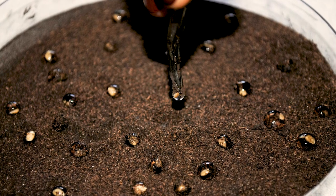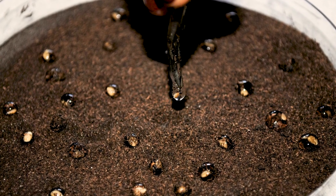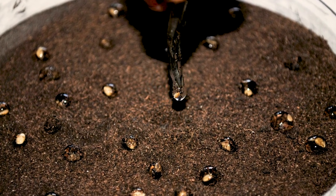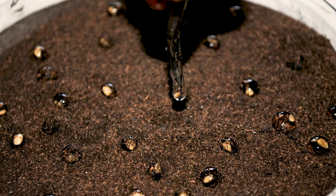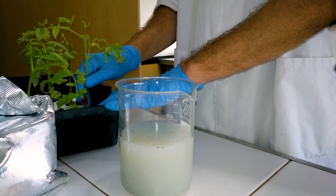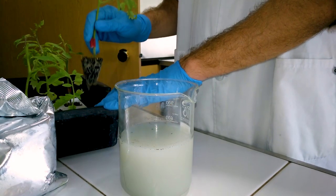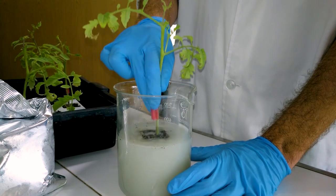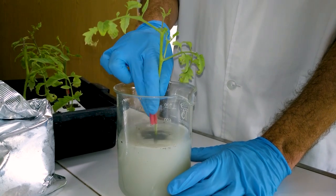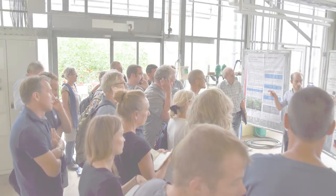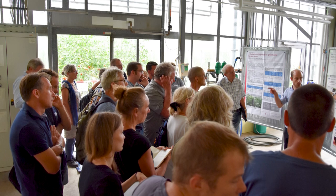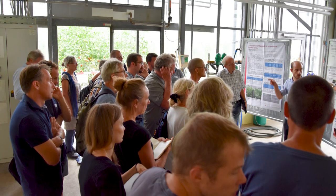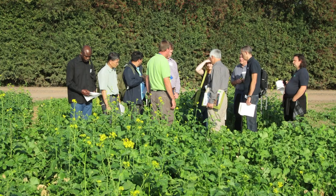BCAs are often used to protect seeds or plantlets from an early infection by soil-borne pathogens. The main application method is seed dressing or root dipping with BCAs just before planting. Depending on the country, the number of commercialized and available BCAs varies.